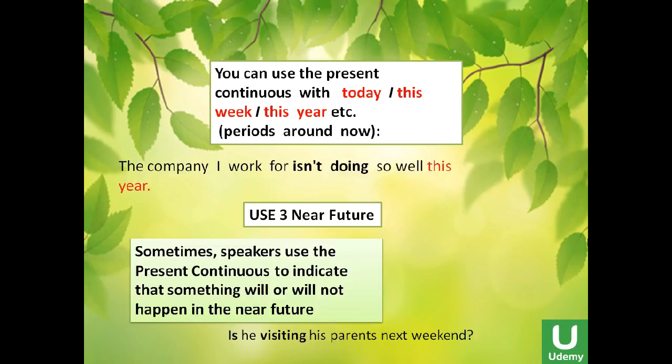Sometimes speakers use the present continuous to indicate that something will or will not happen in the near future. For example: 'Is he visiting his parents next week?' — 'Yes, he is' or 'No, he isn't.' We also use the present continuous when we have decided and are sure about doing something. If you say 'I'm going to school,' that means you are 100% sure you're going.